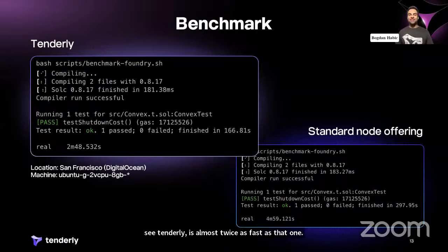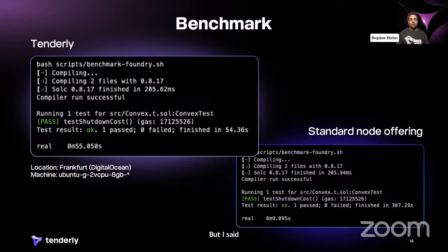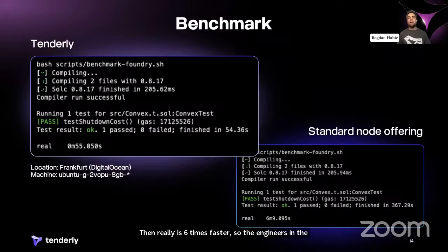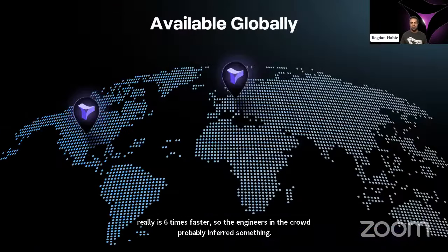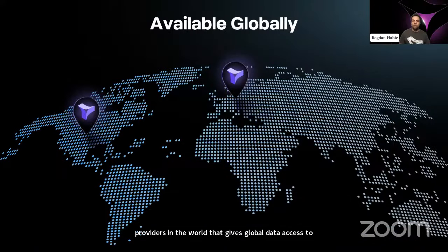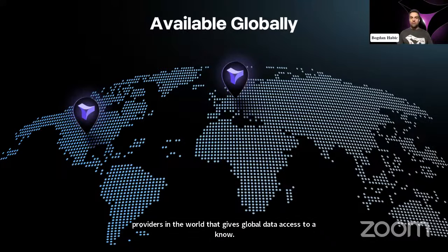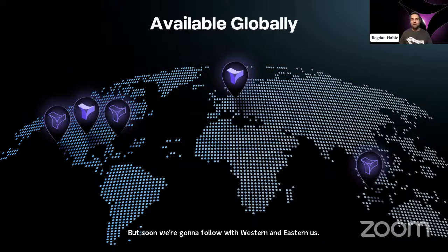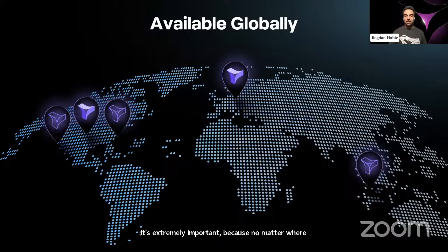Tenderly is one of the first node providers in the world that gives global data access to a node as a service product. Right now we're deployed in Central US and Western Europe, but soon we'll follow with Western and Eastern US, and then Asia as well. This is extremely important because no matter where the users of your dApp are, you can be assured you're getting the fastest access to a node.